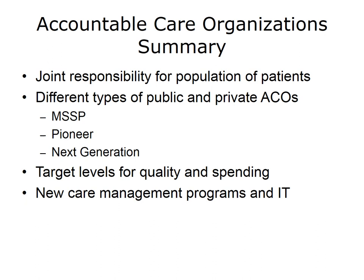This concludes Lecture B, Accountable Care Organizations. In summary, an ACO is a group of providers that are jointly responsible for the healthcare spending and quality of a particular population of patients. There are multiple types of public and private sector ACOs. Some of the most common public sector ACOs are the Medicare Shared Savings Program, Pioneer, and Next Generation Programs. ACOs must set and meet target performance levels for quality of care and spending. If they meet their targets, they can share savings with the government or private payers. ACOs will require new care and care management programs and information technologies.